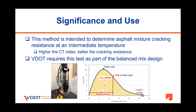This test method is a requirement for the VDOT-BMD process and is used to determine asphalt mixture cracking resistance at an intermediate temperature, which is 25 degrees Celsius for Virginia climate. In general, the higher the CT index value, the better the cracking resistance, and consequently, the less the cracking amount in the field.